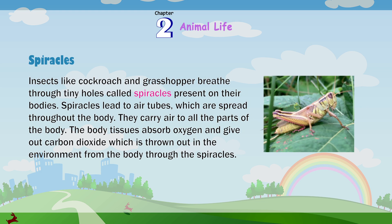Spiracles. Insects, like cockroach and grasshopper, breathe through tiny holes called spiracles, present on their bodies. Spiracles lead to air tubes which are spread throughout the body. They carry air to all parts of the body. The body tissues absorb oxygen and give out carbon dioxide, which is thrown out into the environment through the spiracles.